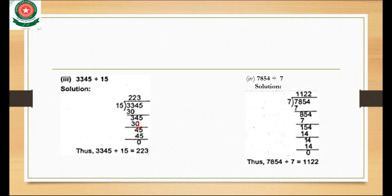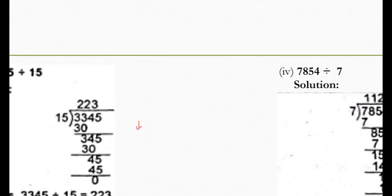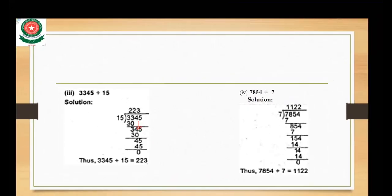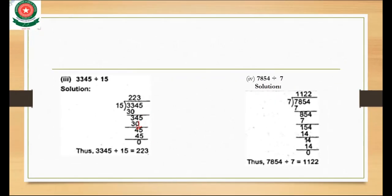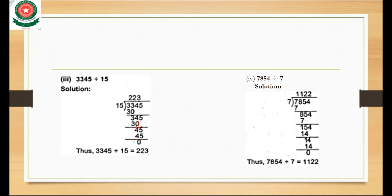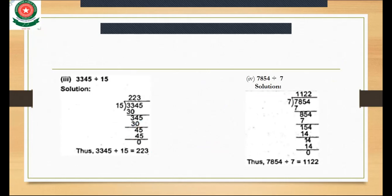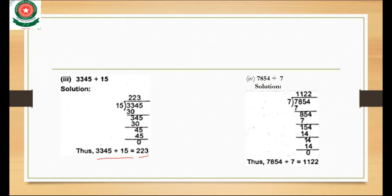We multiply with the number that gives 45: 15 times 3 is 45. So 45 minus 45 equals 0. When you divide 3345 by 15, the answer 223 comes. All parts follow this same process.